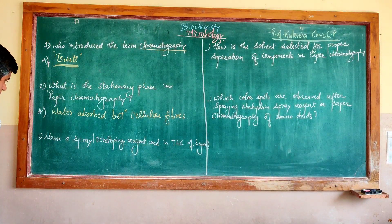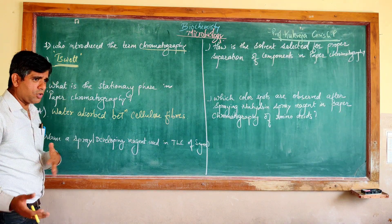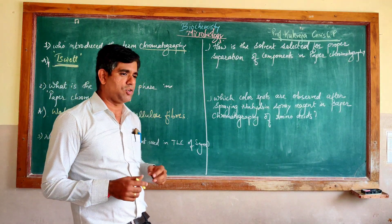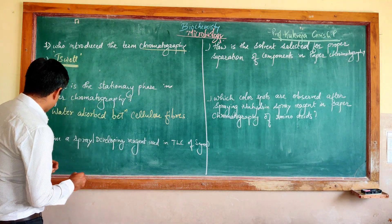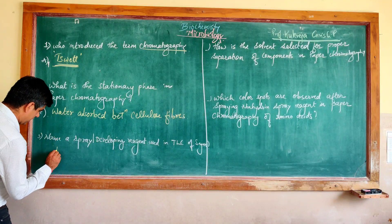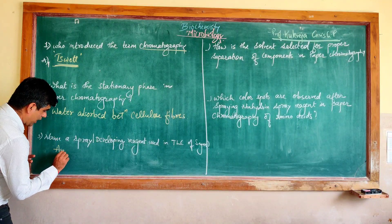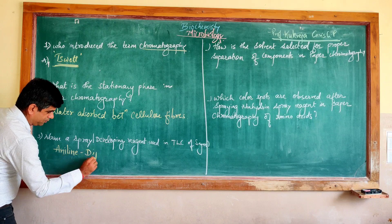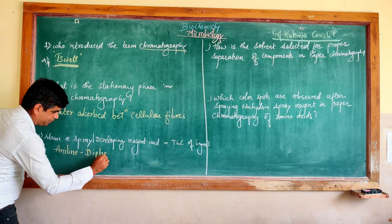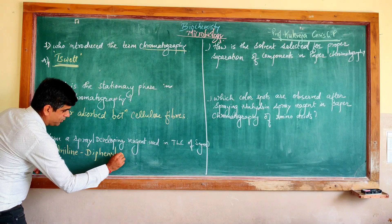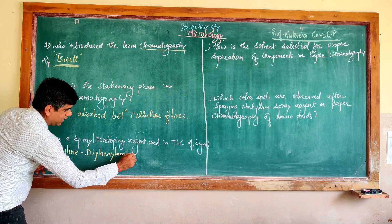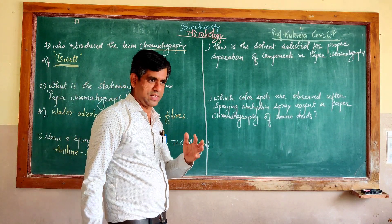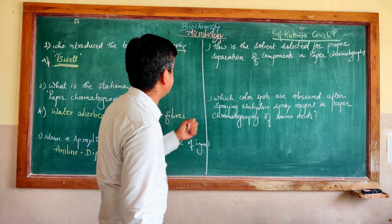The next question: name the spray reagent, also called the developing reagent, used in TLC for sugars. There are many, but one example is aniline diphenylamine, a reagent used as a developing or spray reagent in a typical TLC of sugars. We will discuss more in detail.